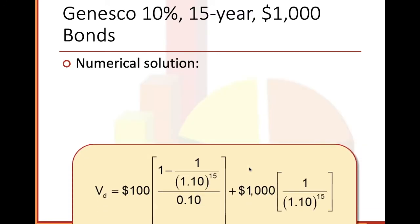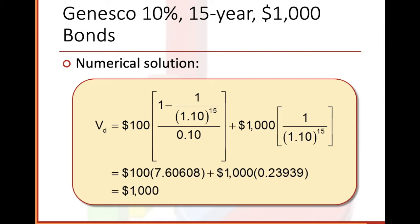Here's a Genesco 10%, 15-year, $1,000 bond — numerical solution. We plug in: INT = $100, rate = 1.10, years = 15, maturity = $1,000. So 100 times [1 minus 1 over 1.10^15] over 0.10, plus 1000 times 1 over 1.10^15. When we do all the calculations, these values balance out and we get $1,000. That's kind of basic algebra if you think about it.